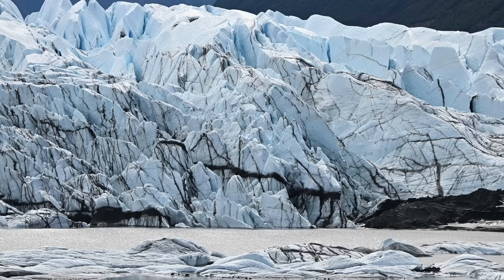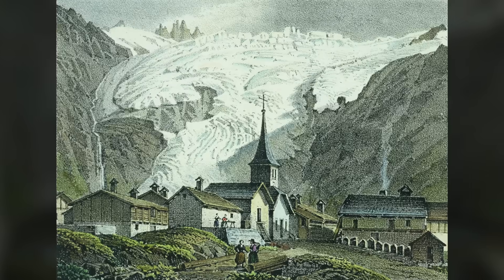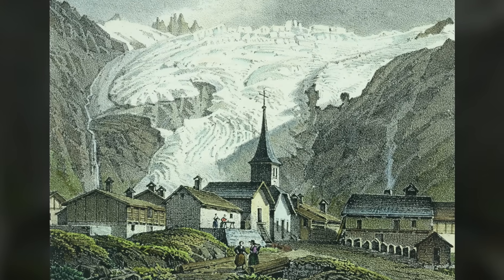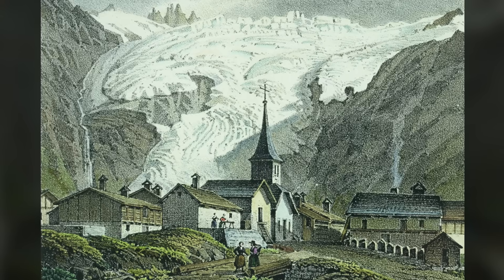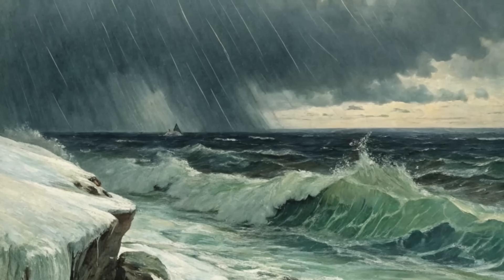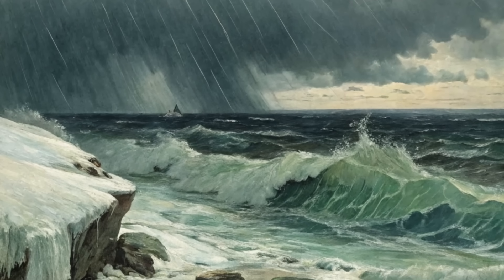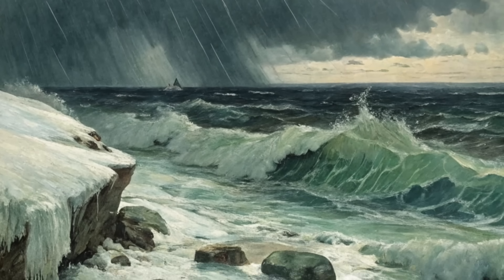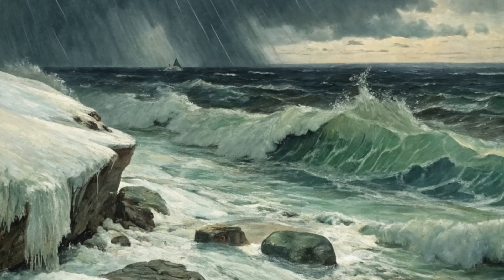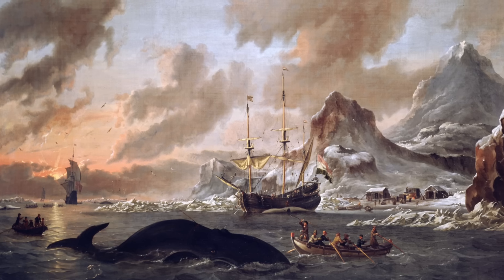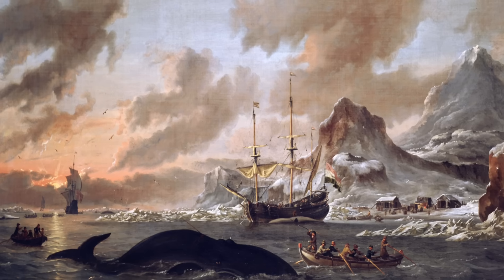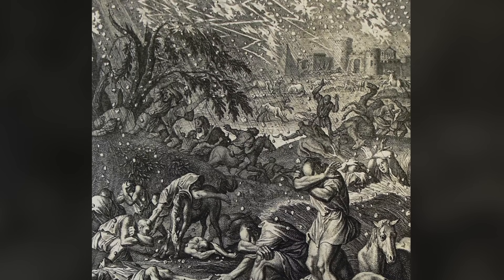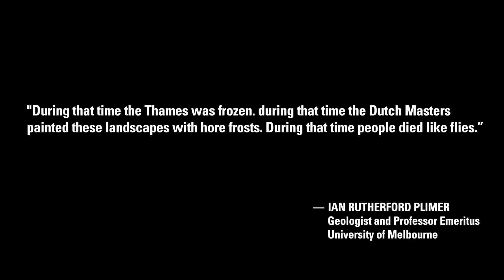The Little Ice Age dramatically changed the picture with the growth of glaciers down mountains in both Europe and China. Increased sea ice, severe and prolific storms, high rainfall and colder erratic climates became relentless. Thick sea ice three miles wide sometimes bordered the English Channel. It was a period when major plagues and famines ravaged the world. During that time, the Thames was frozen. During that time, the Dutch masters painted landscapes with hoarfrosts. During that time, people died like flies.